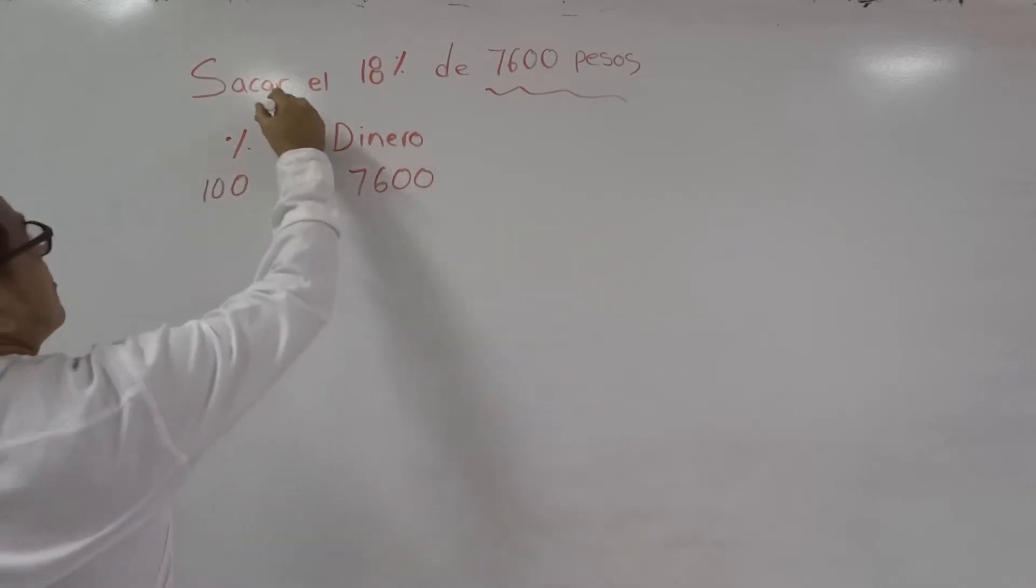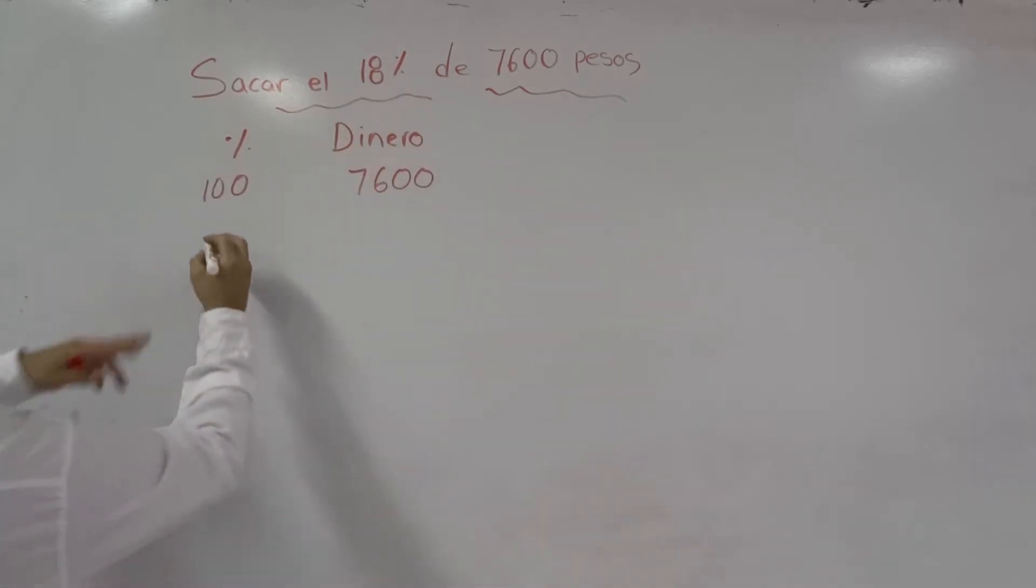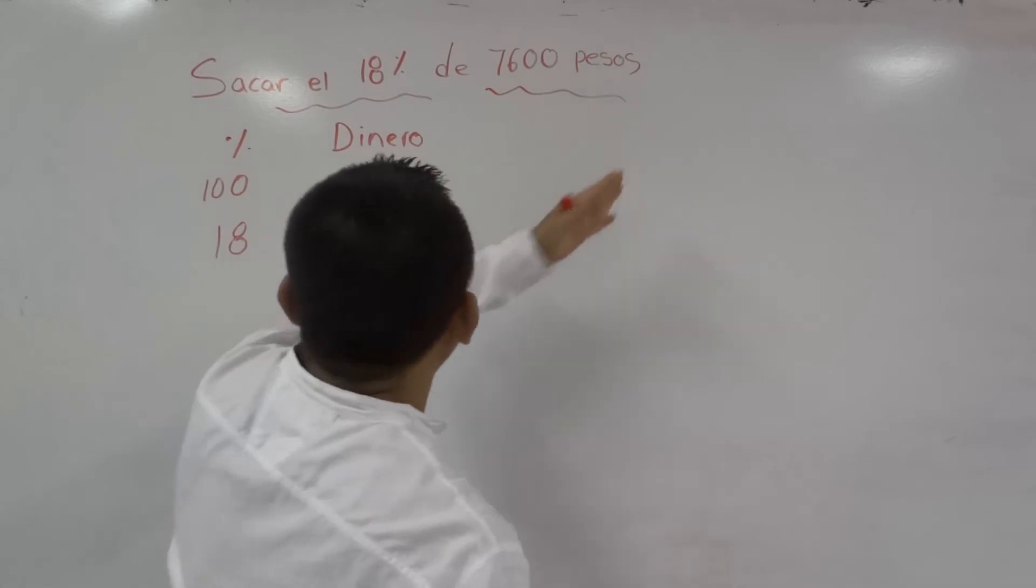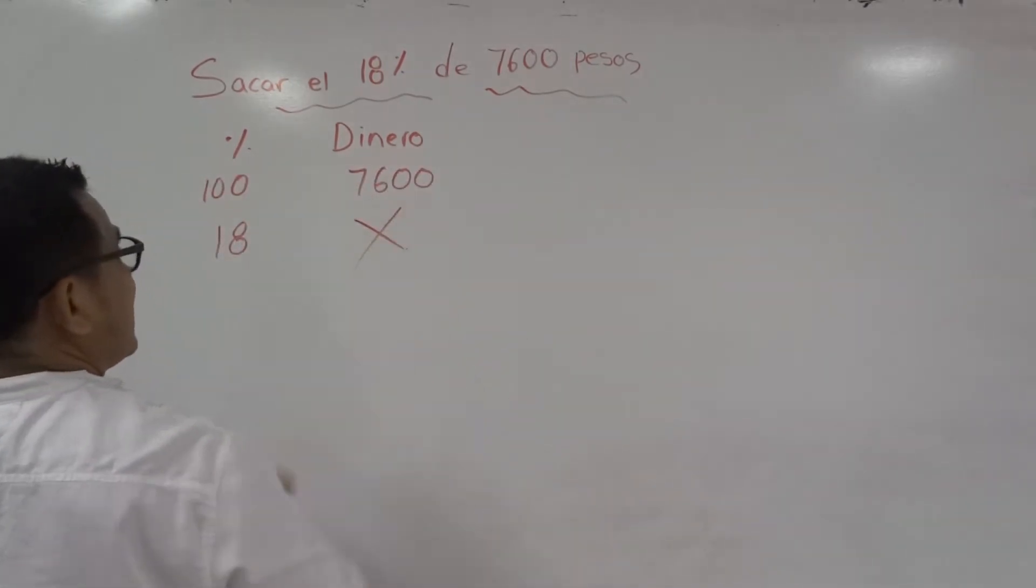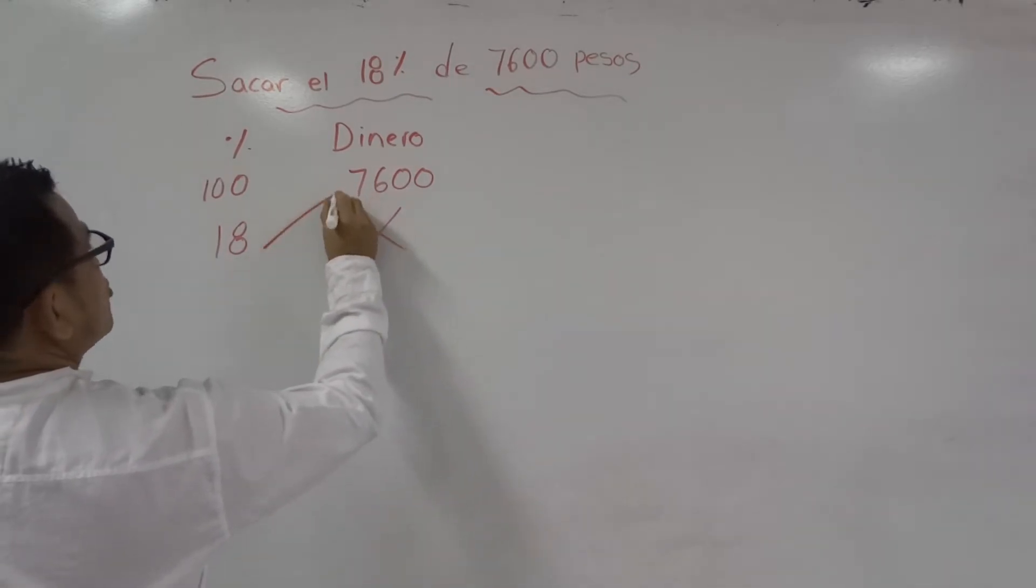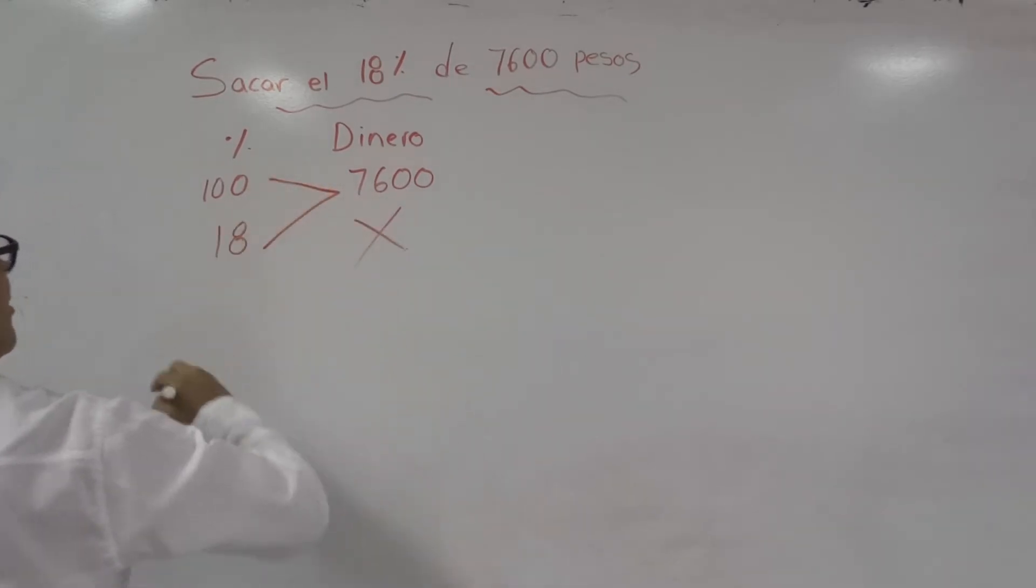Entonces tenemos el 18%. Cuando vamos a pagar no tenemos esta otra variable, la que vamos a buscar. Lo hacemos por la regla de 3: 18 por 7600 entre 100.